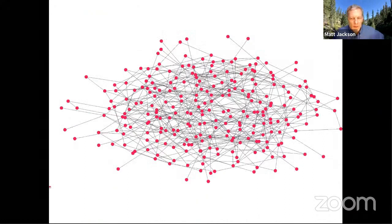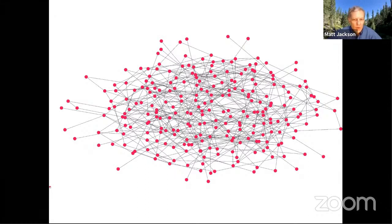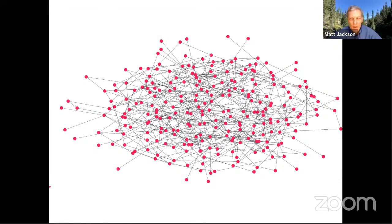I'm going to start with a simple exercise. I'm going to show you a high school of 255 students and the friendships inside that high school. I'm going to do two different versions of it — one is a computer-generated fictional high school and the other is a real high school — and show you what the differences are between those.